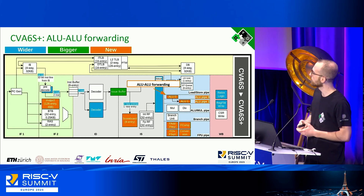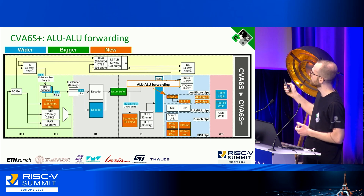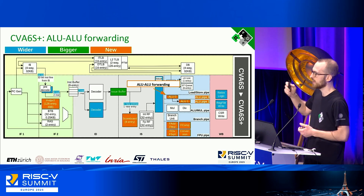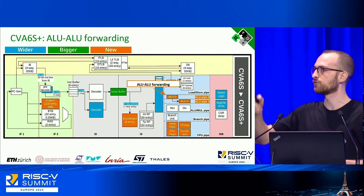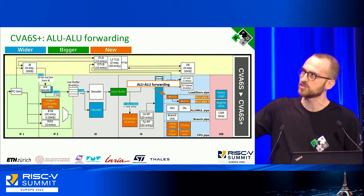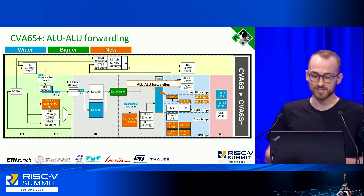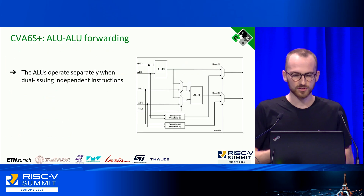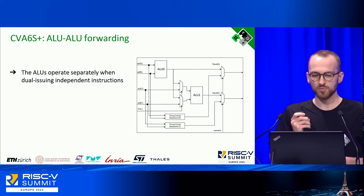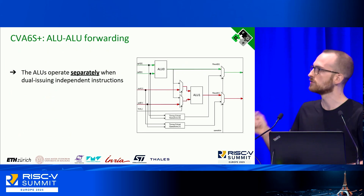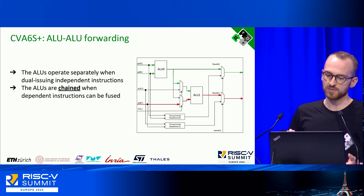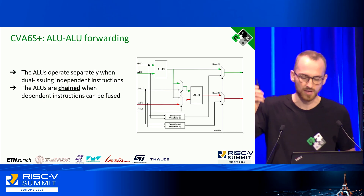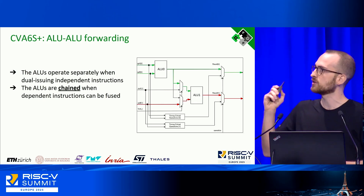We added ALU-to-ALU forwarding. With two ALUs, we noted that back-to-back instructions with read-after-write dependencies were inefficient: we had to complete ALU0, write back, then feed ALU1. The solution is two dedicated paths for independent instructions, but if instructions have a dependency, we steer the result from ALU0 directly as an operand to ALU1.